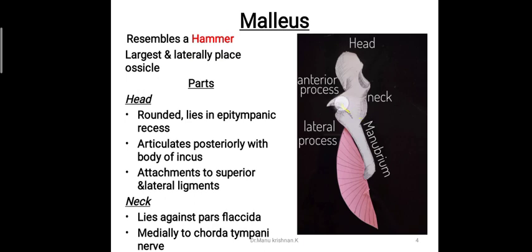The second part is the neck of the malleus. The neck of the malleus lies against the pars flaccida. In the tympanic membrane there are two parts: the pars tensa and pars flaccida. The loose tympanic membrane part lying between the anterior and posterior malleolar folds is termed the pars flaccida, and the neck of the malleus lies against it. It also lies medially to the chorda tympani.